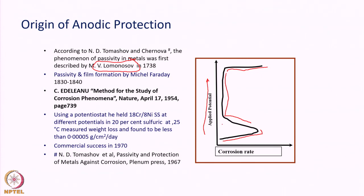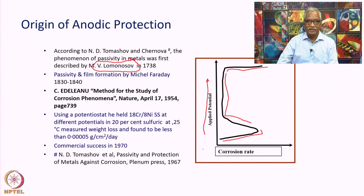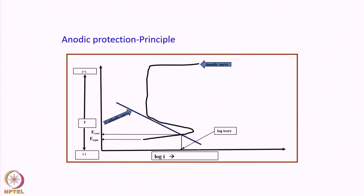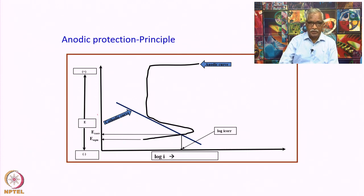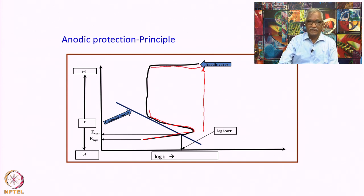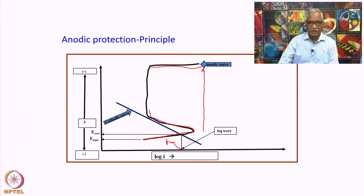This curve has a resemblance to an anodic polarization curve, wherein you plot potential versus current density, as seen in the next slide. The principle of anodic protection is illustrated in a well-known potential versus log i diagram. As you increase the potential, the metal's anodic current increases, reaches a critical value, then remains constant up to a point, and then increases again. This is a schematic polarization diagram of a passivating metal, showing active dissolution, passive dissolution, and transpassive dissolution.